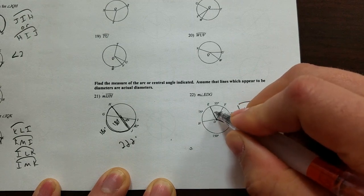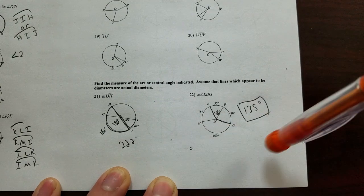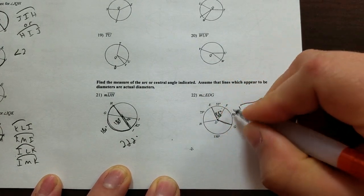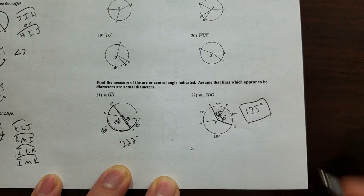Because that's 55. If that's 55 up there then that's 55 down here. If that's 80, that's 80. So 55 plus 80 is 135.